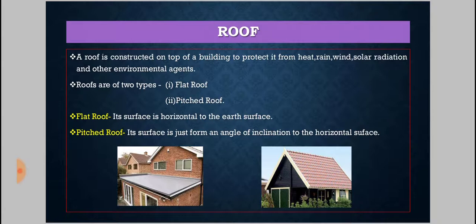Roofs are of two types: flat roof and pitched roof. In case of a flat roof, its surface is horizontal to the ground surface. A slope of generally 1 degree is adopted for rainwater drainage, so that rainwater will not stagnate on the roof surface. If the surface were completely flat, rainwater would stagnate on the concrete and create dampness.